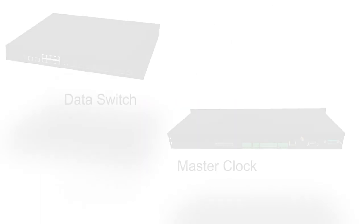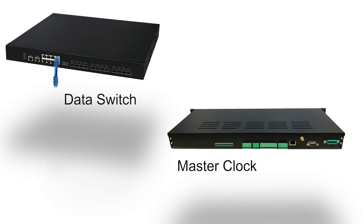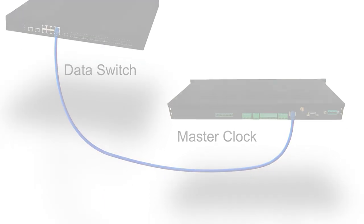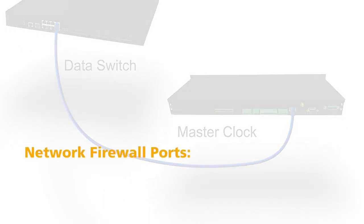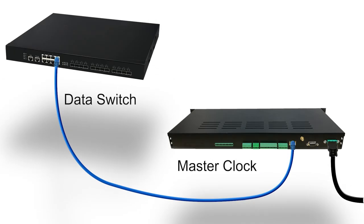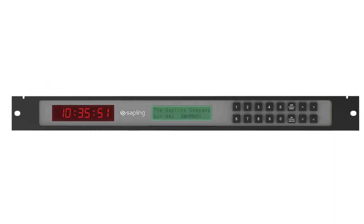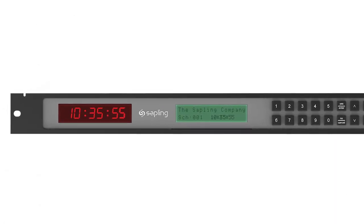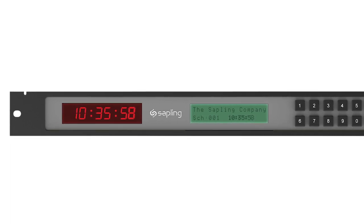Connecting to the Network: After mounting, connect your MasterClock to the local network using a standard network cable. Confirm that your network firewall ports 80, 123, and 1777 are open on your computer and network firewall to allow the MasterClock to operate on the network, and power your MasterClock. The MasterClock is configured to DHCP by default, but can be configured with a static IP address as well.